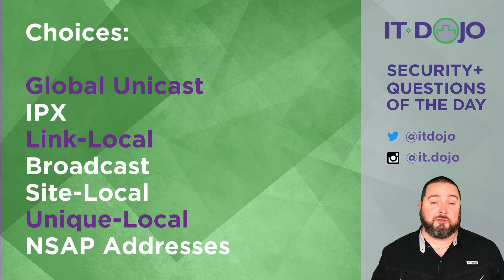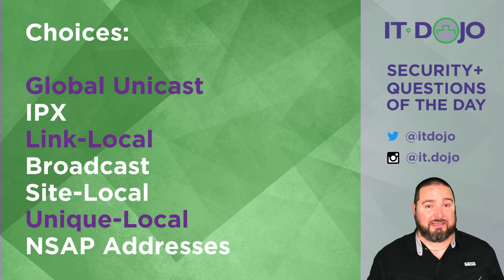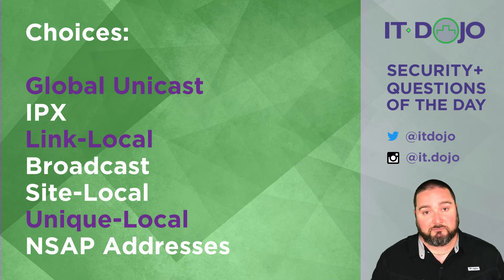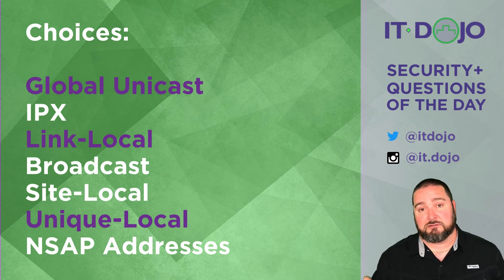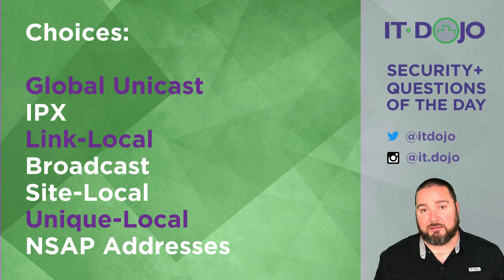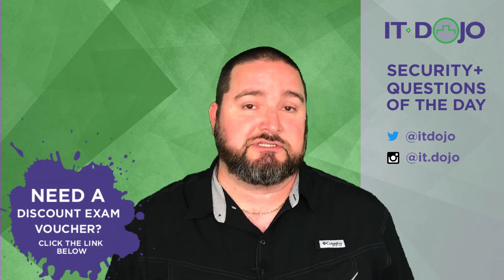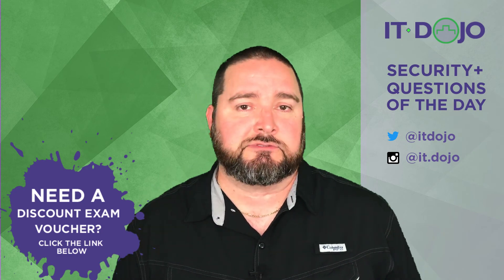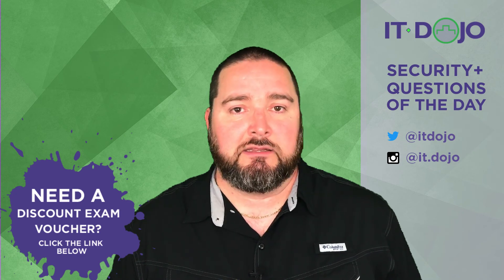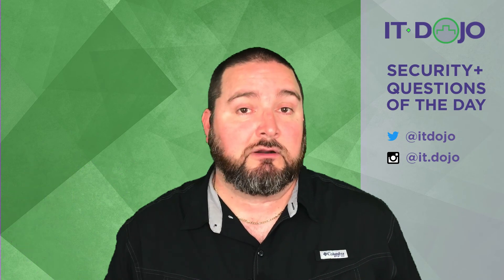We already have our three right answers. The last choice on the list is an NSAP address — negative. NSAP addresses are associated with ISIS, or Intermediate System to Intermediate System, and not something most of us deal with anymore. So the correct answer choices are global unicast, link local, and unique local. Site local was the tricky one — it's no longer a valid IPv6 address, even though it once was. Appreciate you being here — two more questions down. Please click like and subscribe. I do these questions every single day, and I'll see you tomorrow.